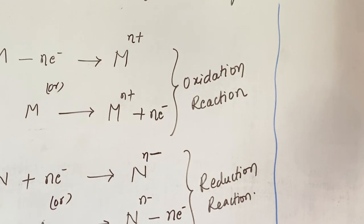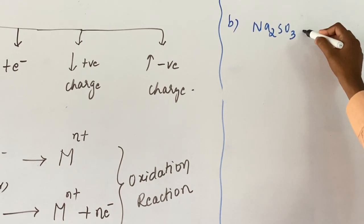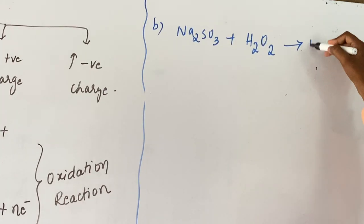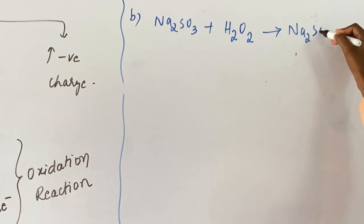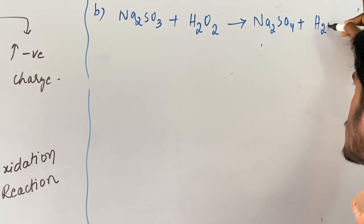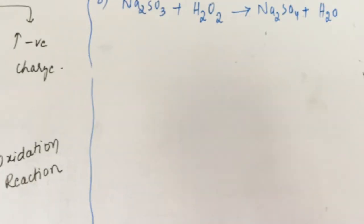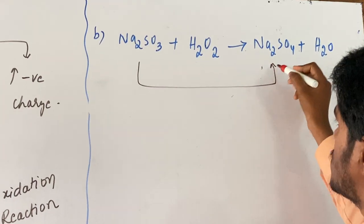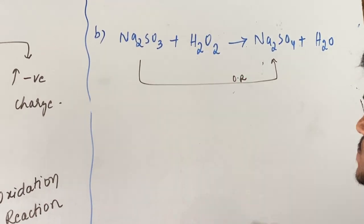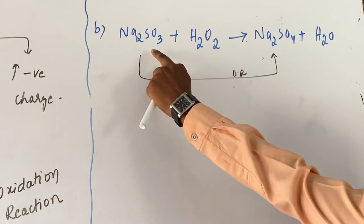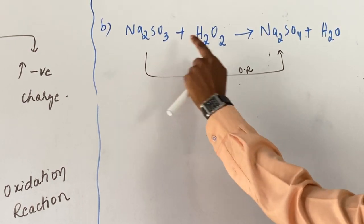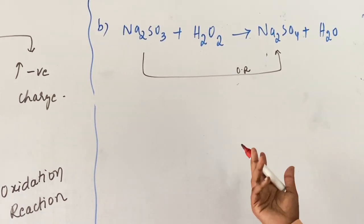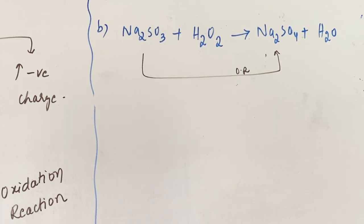One more example: the reaction of sodium sulfide with hydrogen peroxide H₂O₂ gives Na₂SO₄ + H₂O. The left side compound contains 3 oxygen atoms total, and the right side has 4. Addition of oxygen represents that the reaction is an example of oxidation reaction.